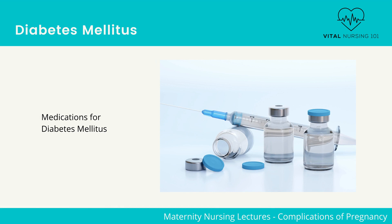Oral hypoglycemics such as glyburide are occasionally used for gestational diabetes. Glyburide is in a class of medications called sulfonylureas, and it lowers blood sugar by causing the pancreas to produce insulin and helping the body use insulin efficiently.